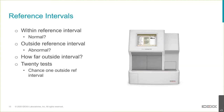If something's outside the reference interval, does that automatically make it abnormal? Not always — if it's mildly outside, that patient may be the equivalent of the 5% excluded from the reference interval. If it's more markedly outside, it's more likely abnormal.